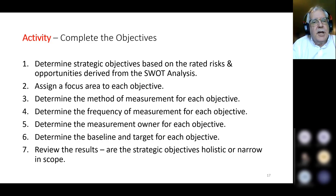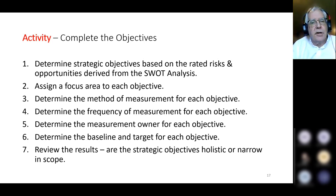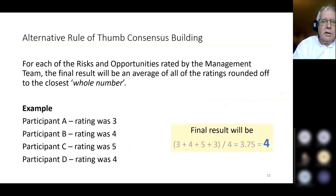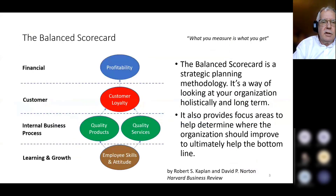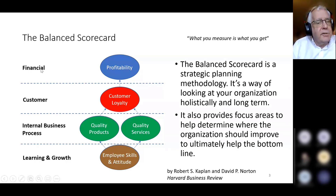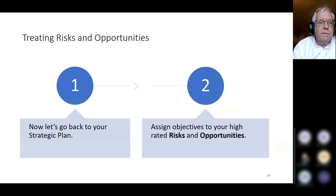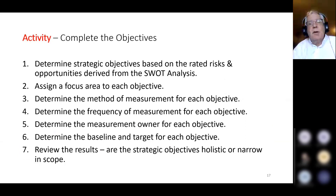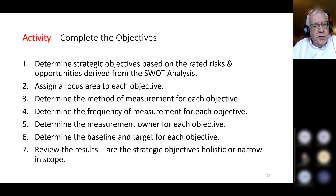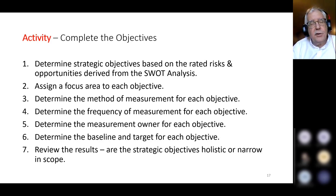Here's an activity for completing the objectives. Number one: determine the strategic objectives based on the rated risks and opportunities from the SWOT analysis. Number two: assign a focus area to each objective — learning and growth, internal business process, customer, financial (or budget if you're in government). Number three: determine the method of measurement for each objective. Number four: determine the frequency. Number five: determine the measurement owner. Number six: determine the baseline and target. And number seven: review the results, using that balanced scorecard methodology for strategic planning.